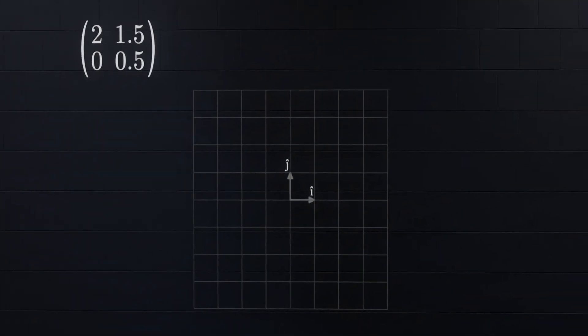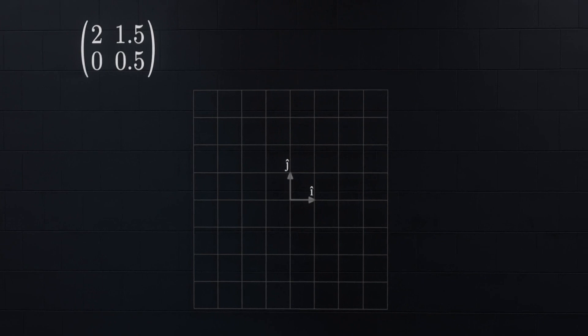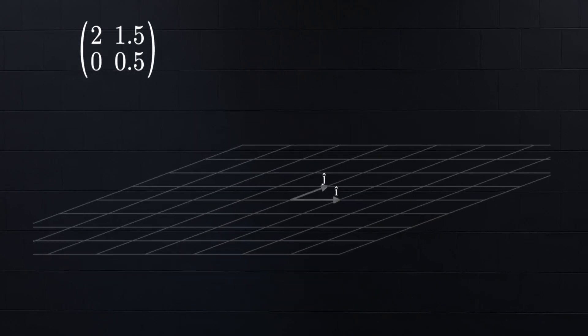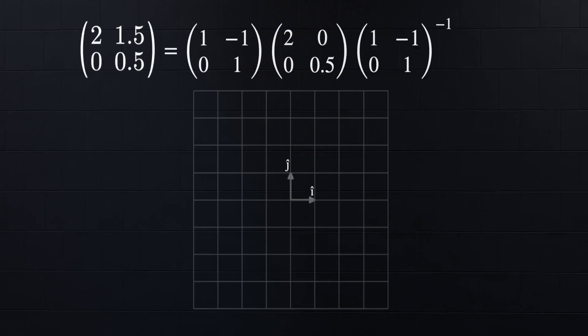In simple terms, it tells us how a matrix transforms a given space. For example, if you have a matrix (2, 1.5, 0, 0.5) here, and then we multiply to the standard unit vectors i-hat and j-hat, here is the transformation that we get. Now just by looking at it, we cannot tell what the transformation is. We know that something's squished and something's stretched, but that's really all we know until we expand it using diagonalization.